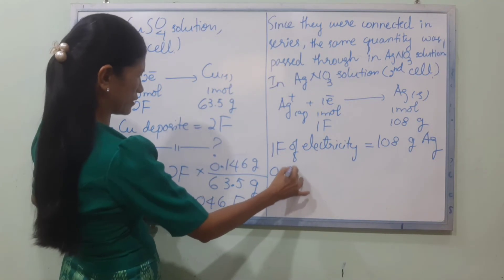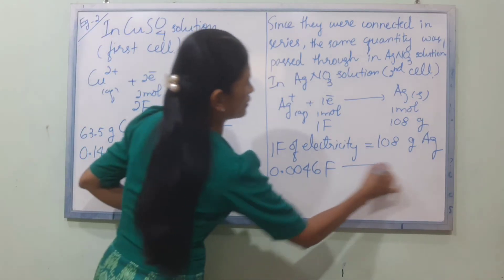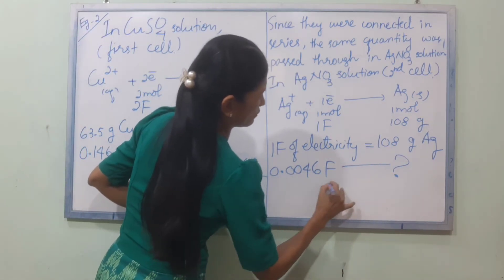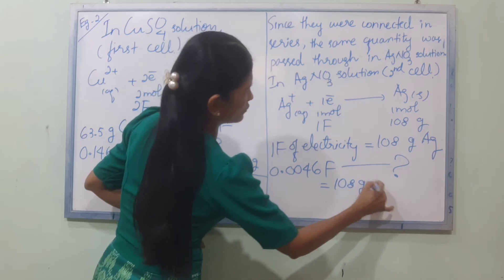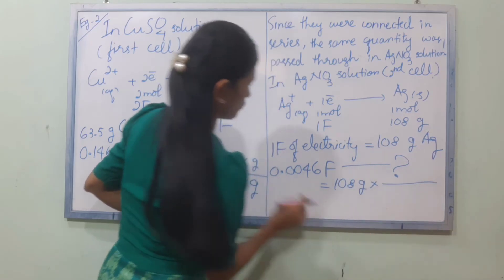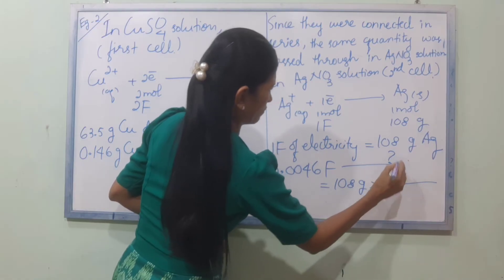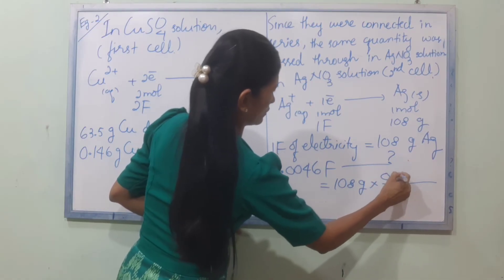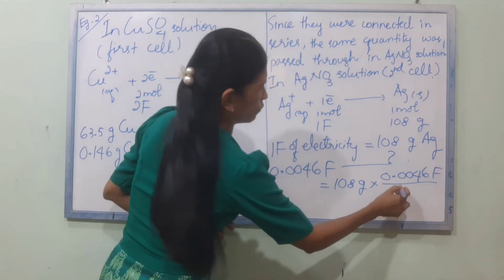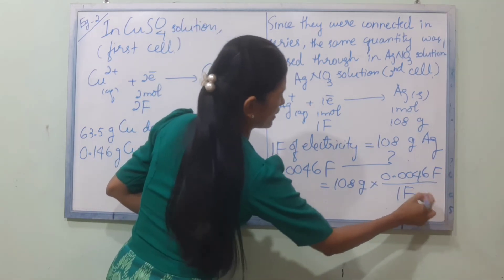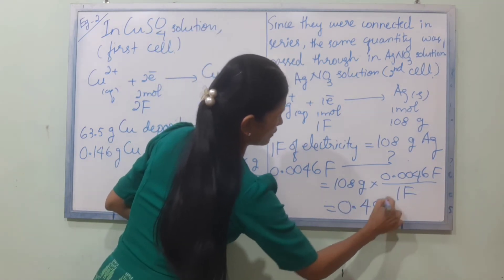Using 0.0046 Faradays and molar mass 108 grams for silver: mass of silver deposited equals 108 grams times 0.0046 Faradays divided by 1 Faraday, giving approximately 0.497 grams of silver.